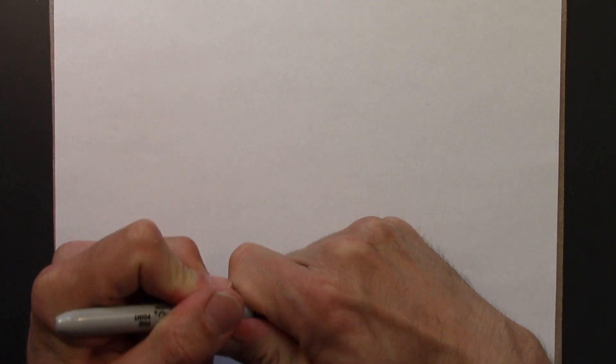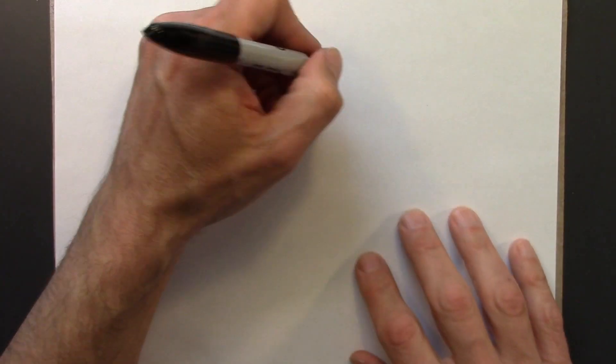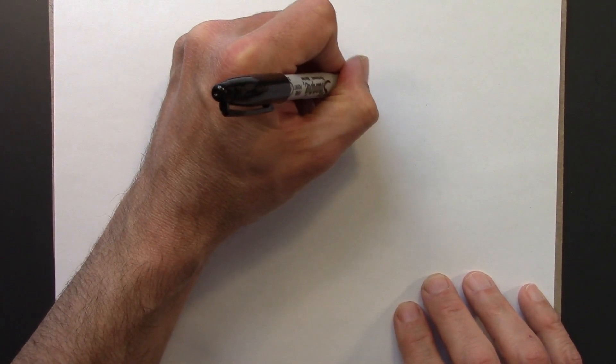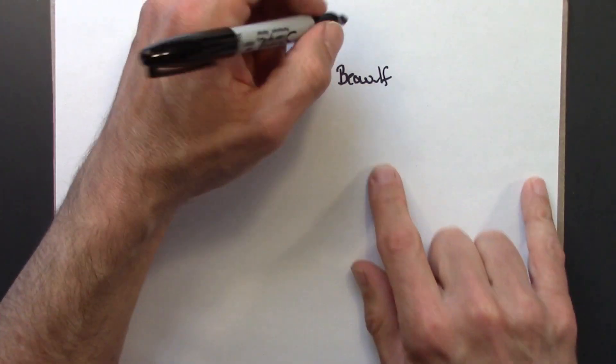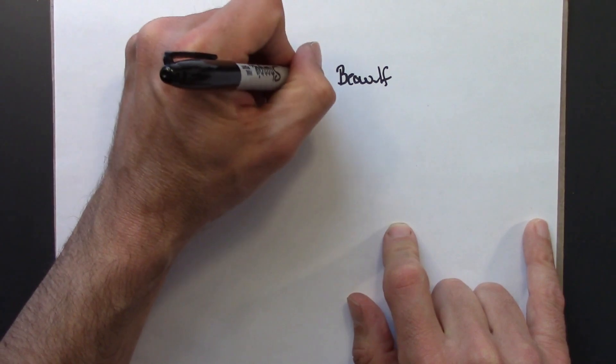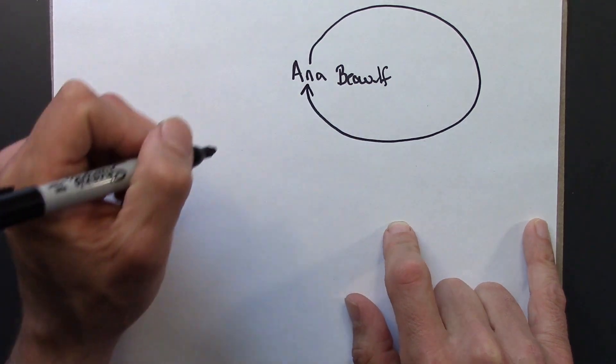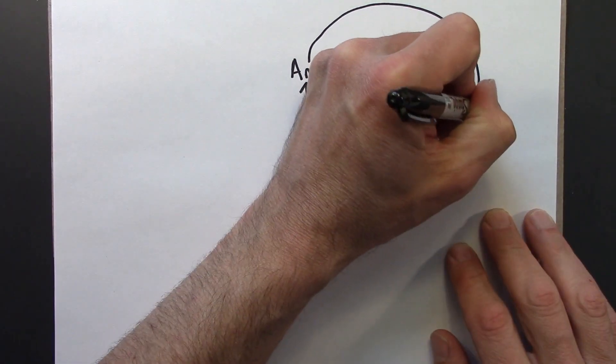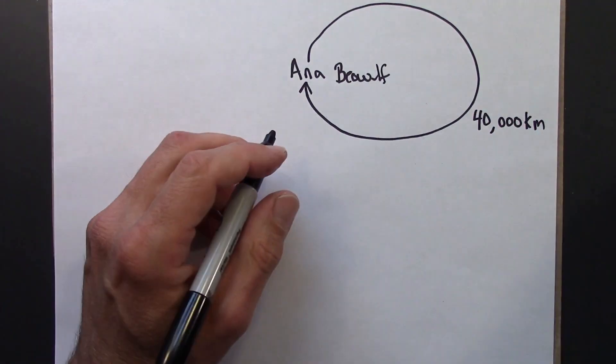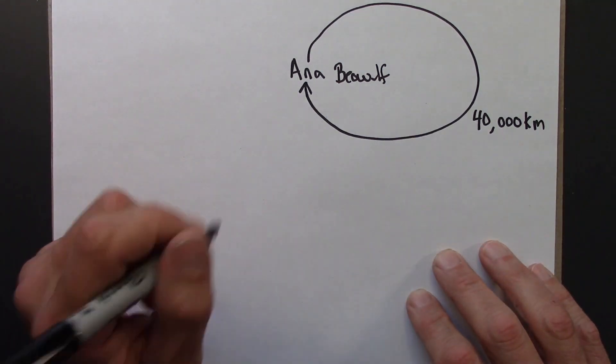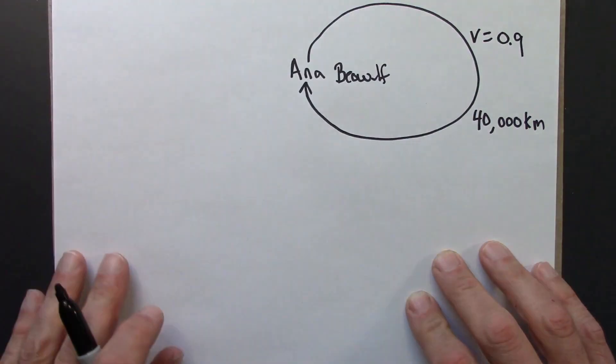So let's start by drawing just a very simple picture of what's going on. We've got Beowulf hanging out on Earth, and then Ana is going to go in a big circle. The circumference of the Earth is this, so that's how far Ana travels. And the speed of Ana is 0.9.